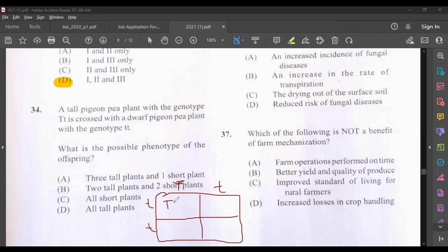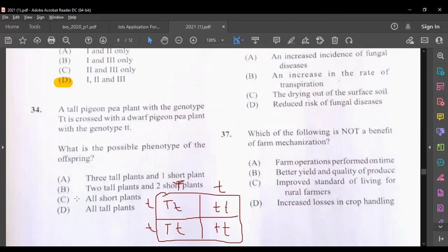So we have a dominant here and a recessive, so that will be a dominant along with a recessive. Then we have these two again, so we have a dominant and a recessive, and these two will be two recessive. So two are heterozygous and two homozygous recessive. What is the possible phenotype of the offspring? Three tall plants and one short plant, that would not be correct. Two tall plants and two short plants. Yes, these two would be tall and these two would be short. So the answer for this question would be B.